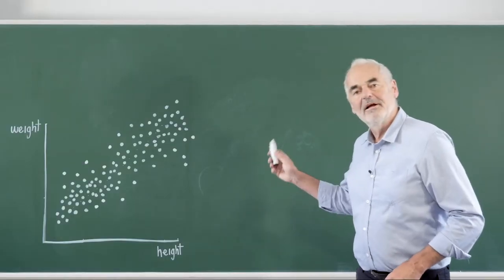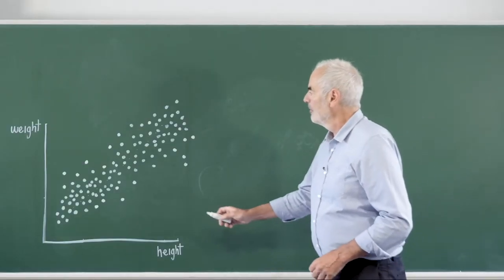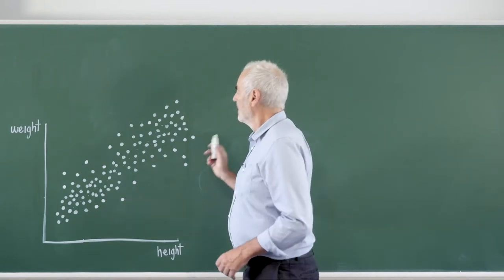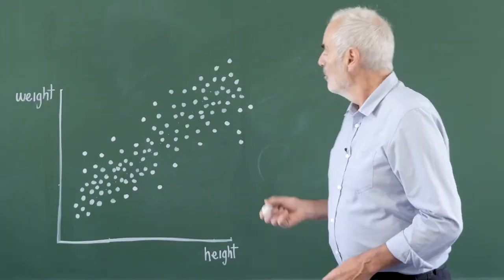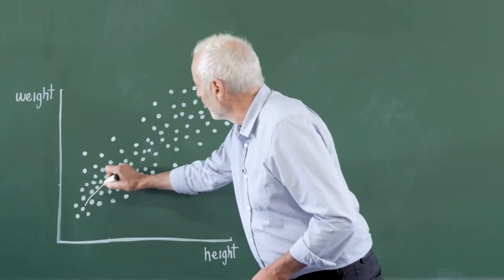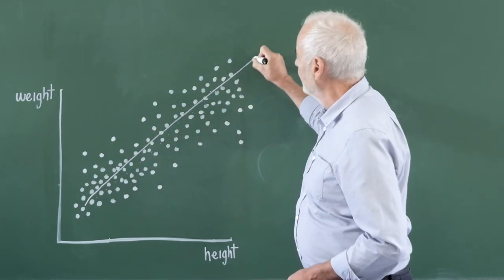Suppose we take a group of individuals and measure their height and weight and plot them in a scatter plot like this. We can see there's actually quite a strong relationship between the two.